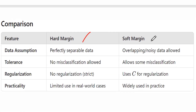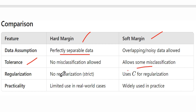Let's see the differences between hard margin and soft margin. Hard margin is mainly applied for linearly separable data, whereas soft margin is applied for overlapping and noisy data. Tolerance: hard margin allows no misclassification — all points must be separable — but soft margin allows some misclassification. Regularization: hard margin applies no regularization, while soft margin uses parameter C as a regularization parameter. Practically, hard margin is limited to rare cases, but soft margin is widely used — many machine learning engineers use soft margin when building SVM models. That is about hard margin and soft margin.